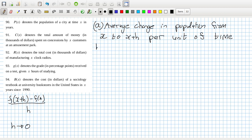And then b would be the rate of change in population from x, no not from x, at x per unit time at x. That's 90.